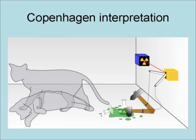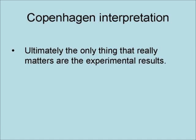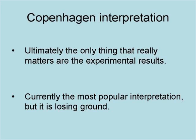In the case of Schrödinger's cat, according to the Copenhagen interpretation, the cat is both dead and alive at the same time until it is actually observed. Ultimately, the only thing that really matters in this interpretation are the experimental results. It is currently the most popular interpretation of quantum mechanics, but it is losing ground.